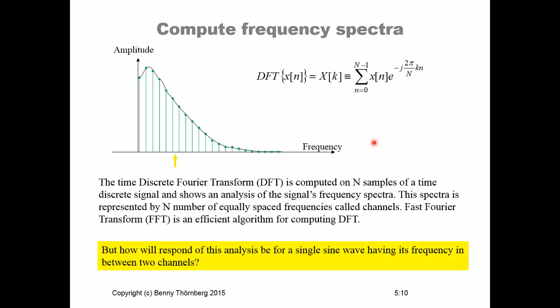But how then will the response be for a single sine wave frequency if it is residing exactly on one of the channels or if it is residing somewhere here in between the channels? If it is residing exactly on the channels, then one could expect that the response would be exactly the amplitude. But what happens if this sine wave frequency is somewhere here in between those two channels, how will the response be like?